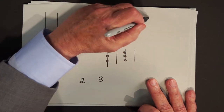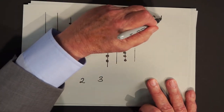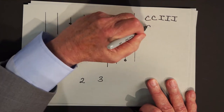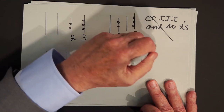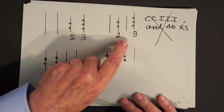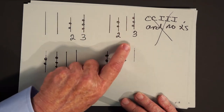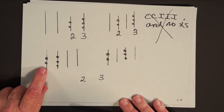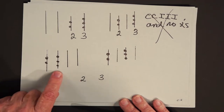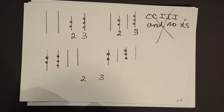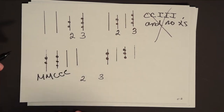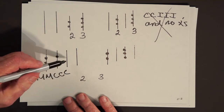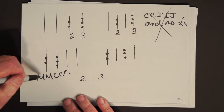For example, how would the Romans write two hundred and three? They would write CC and then III, and they wouldn't say 'and no X's' — why would they? If the X's were there, you would have seen them. If there were stones on the tens line, you would have seen them. Similarly, two stones on the thousands line and three on the hundreds gives you 2,300, which the Romans would write as MMCCC. What you see is what you get.